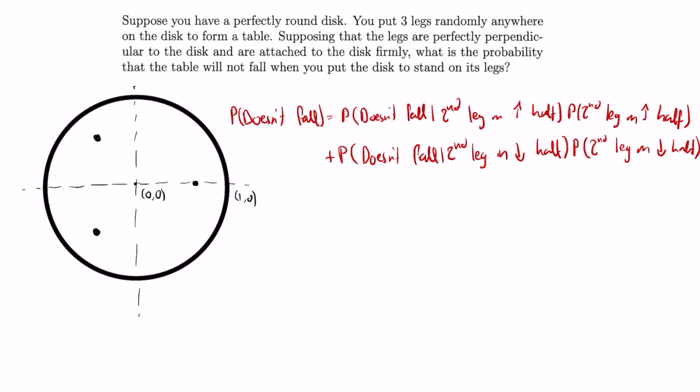The probability that the disc doesn't fall is equal to the probability that the disc doesn't fall given that the second leg is on the upper half of the disc times the probability that the second leg is on the upper half of the disc, plus the probability that the disc doesn't fall given that the second leg is on the lower half of the disc times the probability that the second leg is on the lower half of the disc.